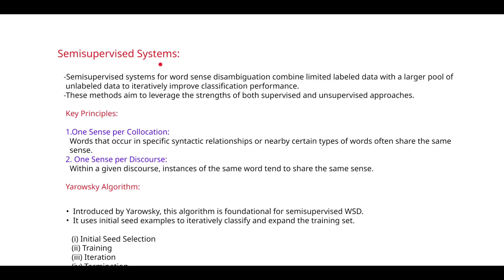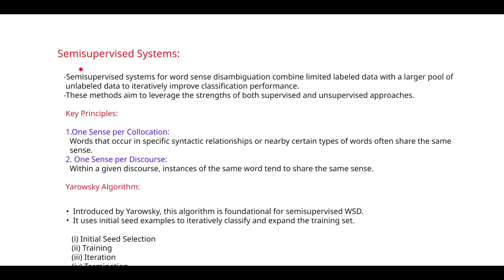Semi-supervised systems, in short, are the combination of supervised and unsupervised systems. The main aim of these systems is to tackle the problem of word sense disambiguation. Here we deal with both labeled data and unlabeled data. Semi-supervised systems aim to leverage the strengths of both supervised and unsupervised approaches — the disadvantages of supervised systems and the advantages of unsupervised systems together become the strengths of semi-supervised systems.